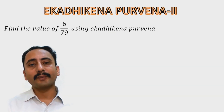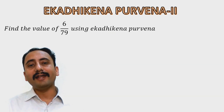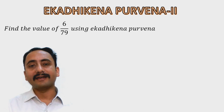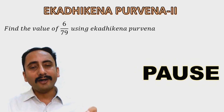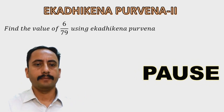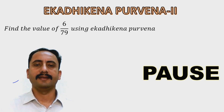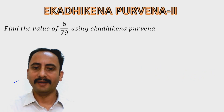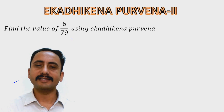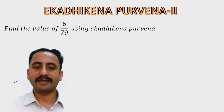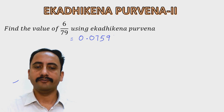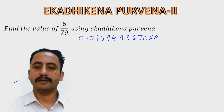Here is a practice problem: find the value of 6 upon 79 using Ekadhika Purvena. Pause the video and try on your own. The decimal form of 6/79 is 0.0759493670886 (bar) — the digits repeat after that.